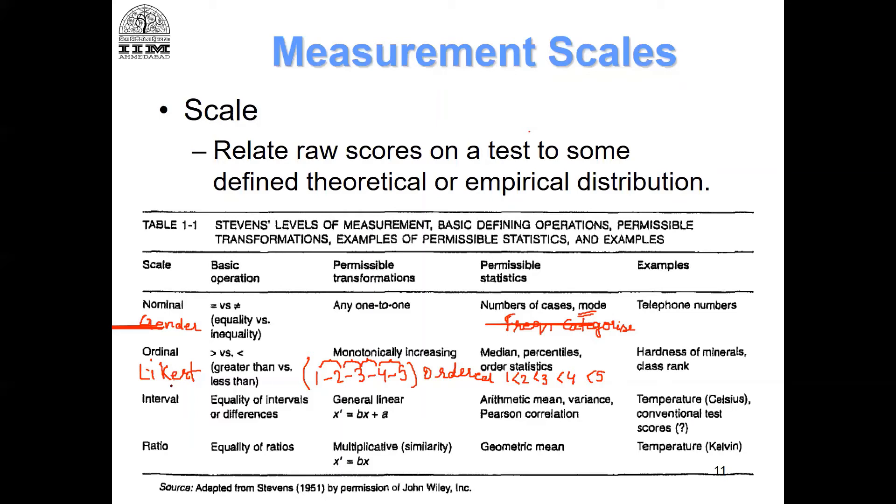If you go to an interval scale, interval scales again have the same kind of ordering, but interval scales assume that the difference between one and two is the same as the difference between two and three, the same as the difference between three and four and five. A very good example could be temperature in degrees Celsius.